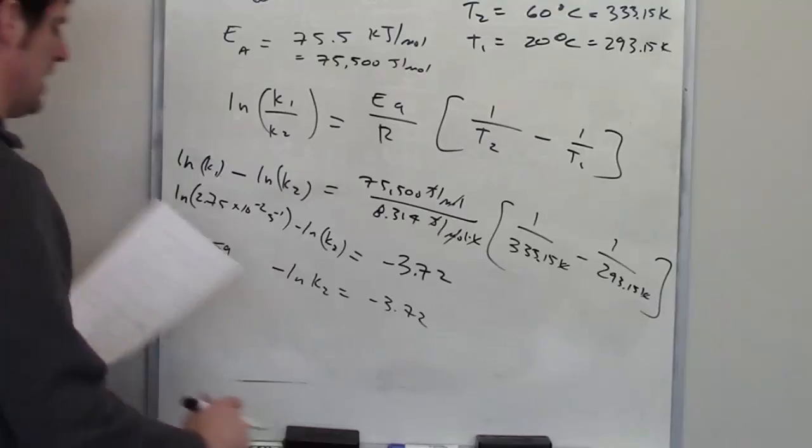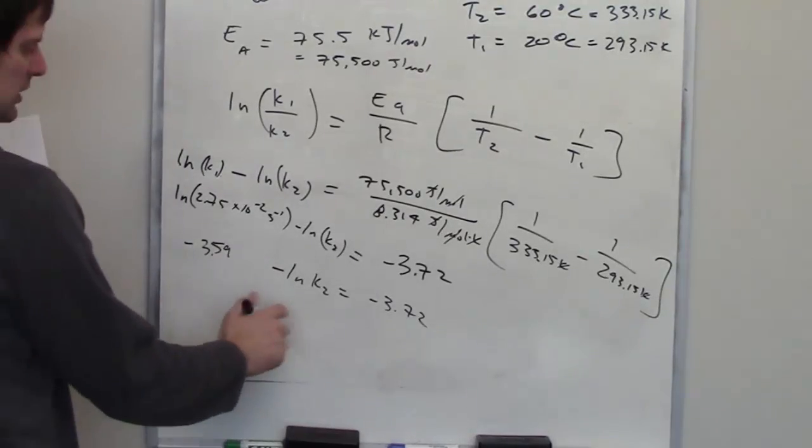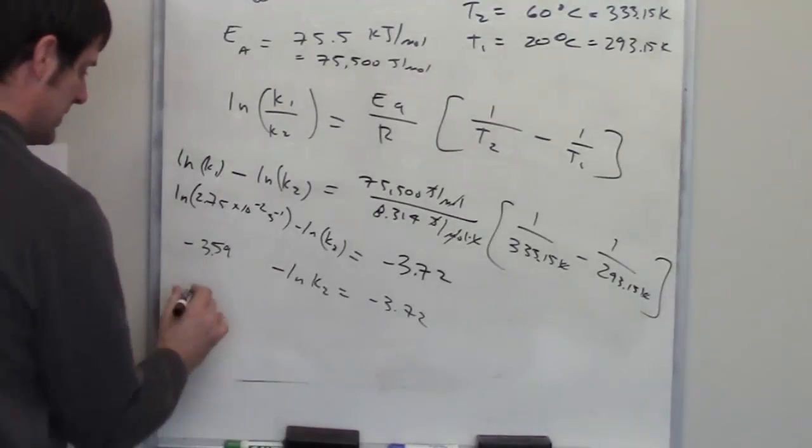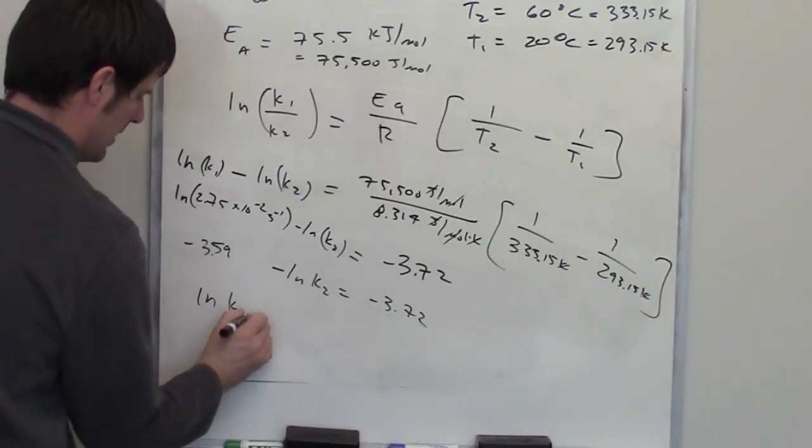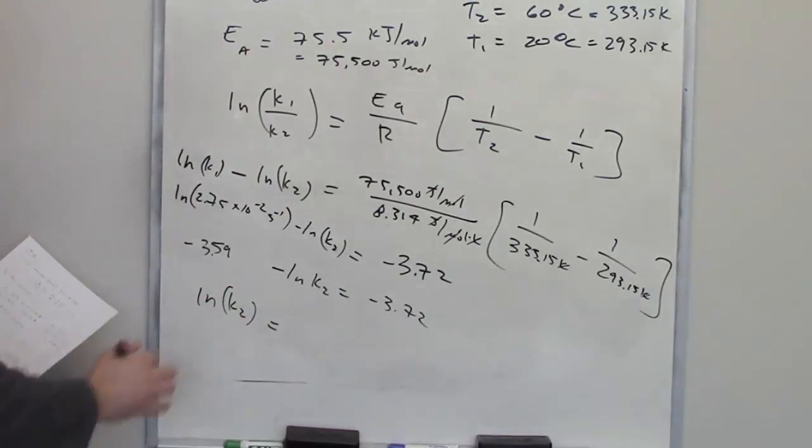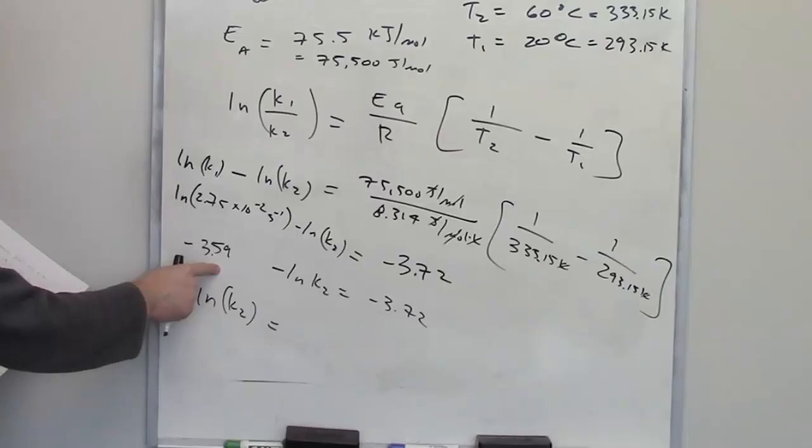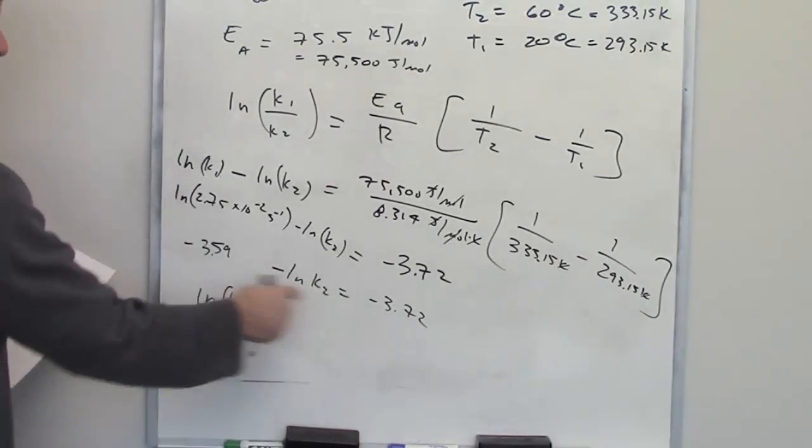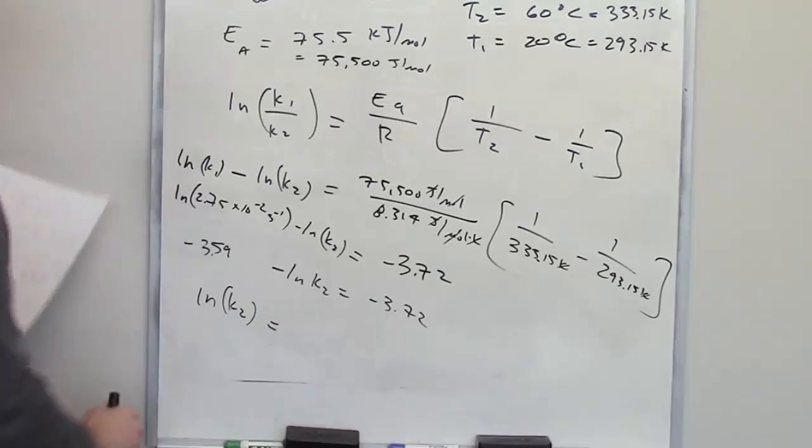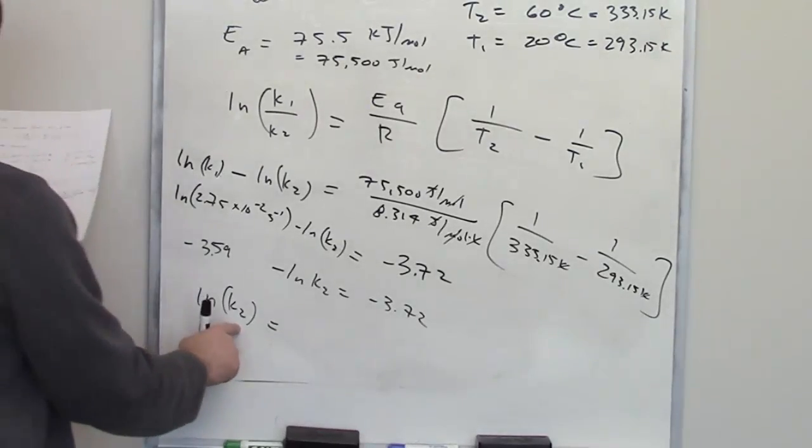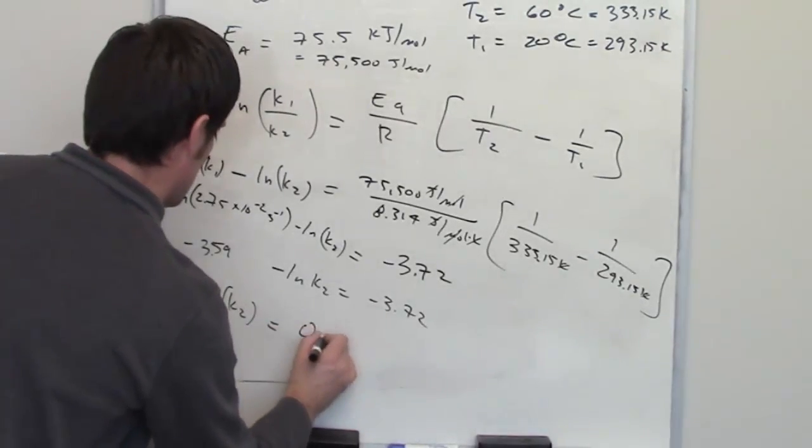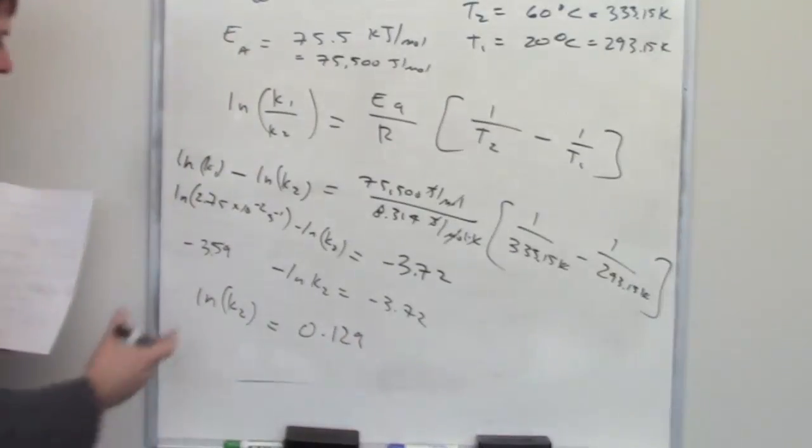So what I'm going to need to do is use algebra to get the LN of K2 on one side, and everything else on the other. So I have to add 3.59 to both sides, and I have to multiply both sides by a negative 1 in order to make this positive. When I do that, I end up getting the LN of K2 is equal to 0.129.